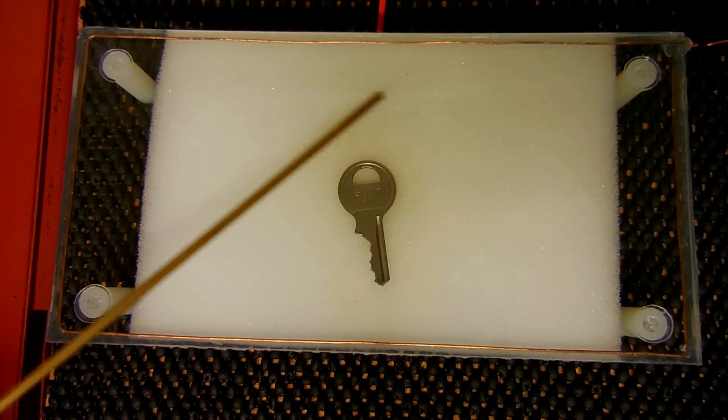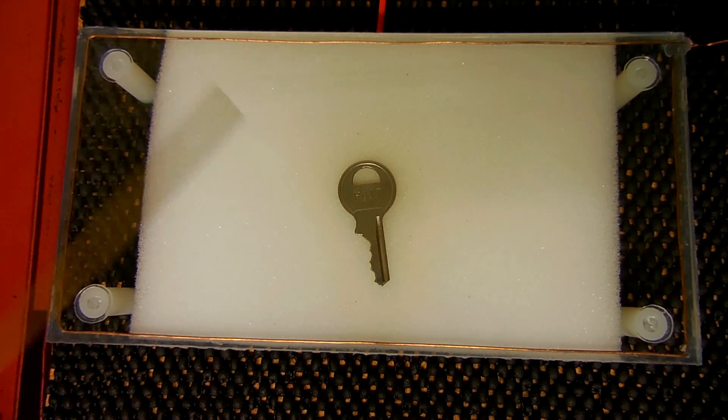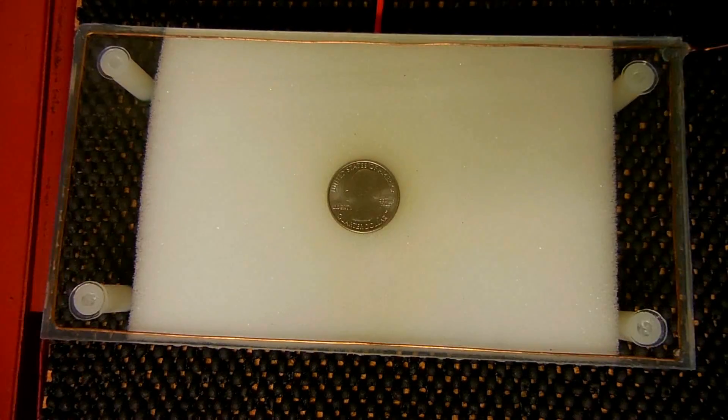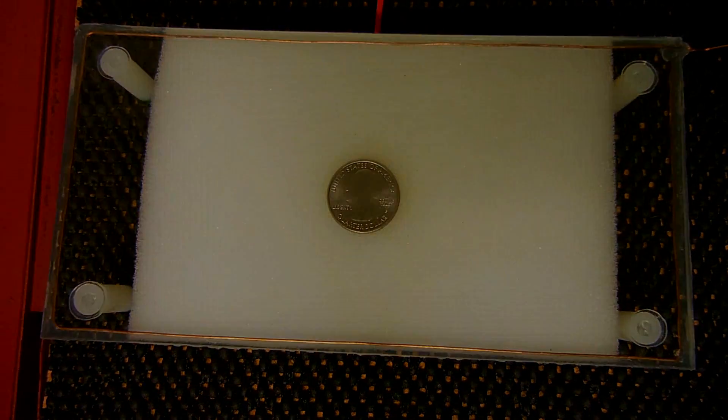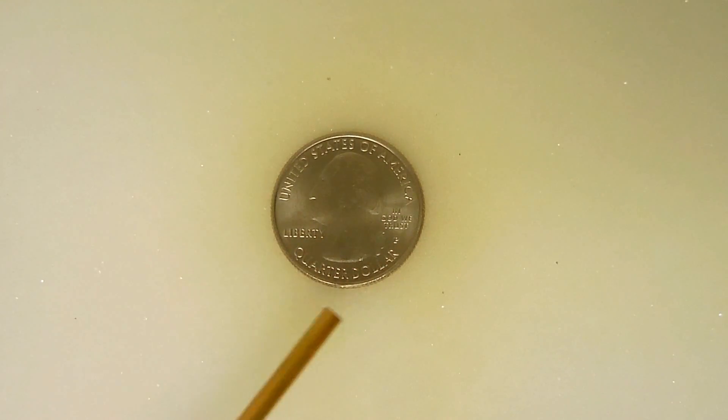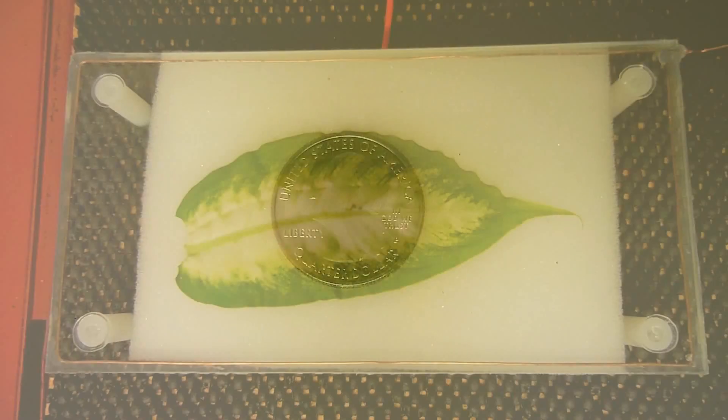Now let me place a coin in there. The quarter's in position. I'm going to turn off the lights and turn on the power supply. You just saw how cool that looked with the corona discharge all around the quarter.